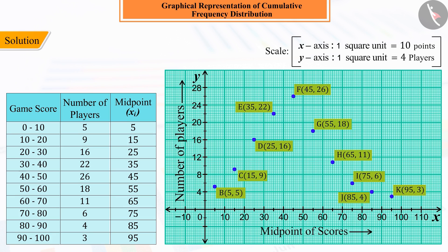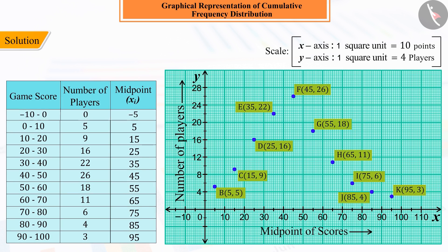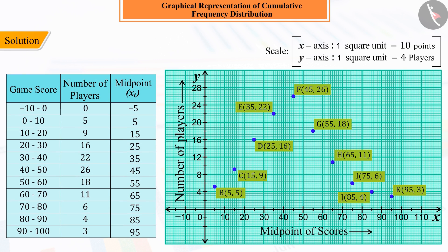Point A represents zero frequency, which comes in the class minus ten to zero, which is just above the zero to ten interval, and the midpoint of that interval, that is, minus five.